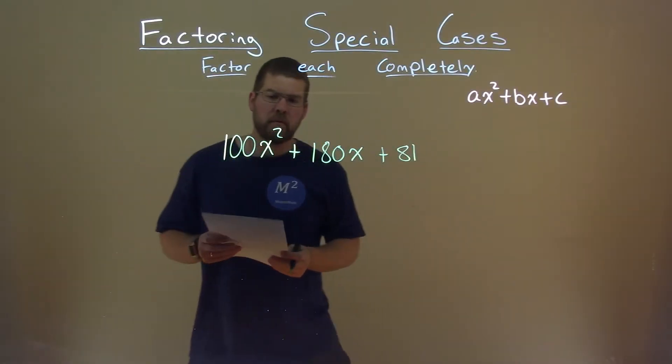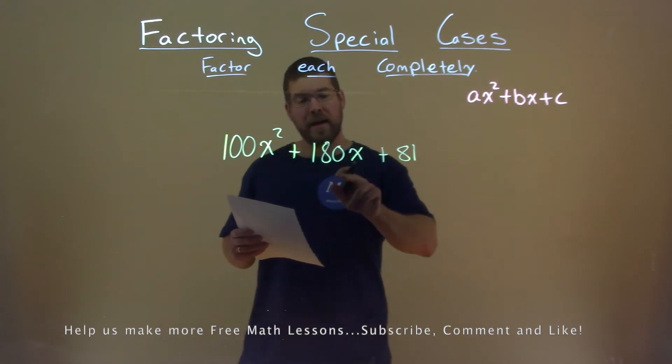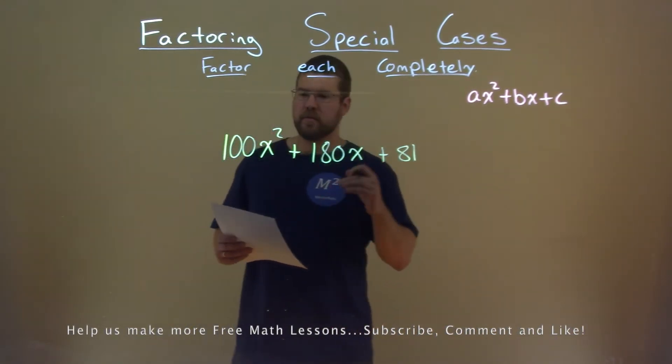We're given this problem right here, 100x squared plus 180x plus 81, and we want to factor this completely.